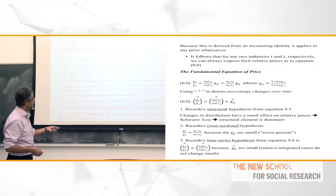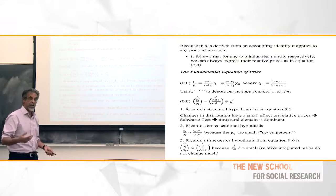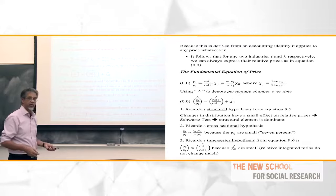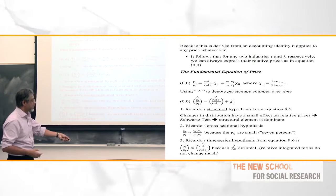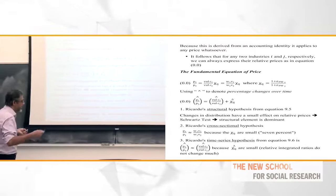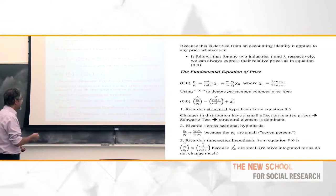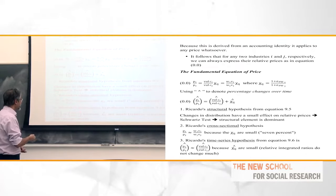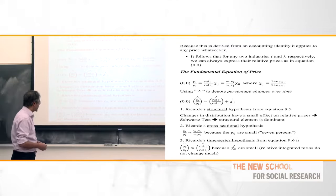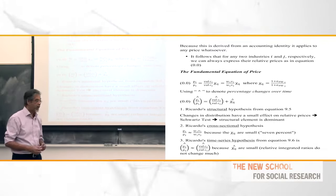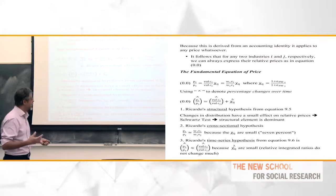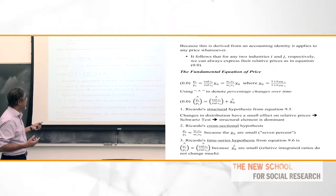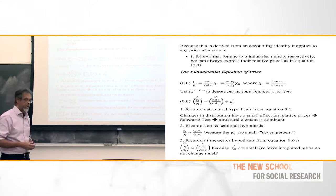Ricardo says the first one gives him that the structural element is dominant — about 93%. For that reason, he assumes that prices are roughly proportional to labor times. Natural prices are roughly proportional to labor times because the wage rate is the same and they cancel out in the case of competitive prices. Therefore that deviation is also small — 10%, 5%, whatever. And over time the distributional elements don't change very much. So you get a time-series hypothesis that the rate of change of relative prices is strongly related to unit labor cost changes. If you're talking about natural prices, the wage drops out. So you're really talking about a labor theory of price: in every case the labor component — the integrated labor component — is dominant.